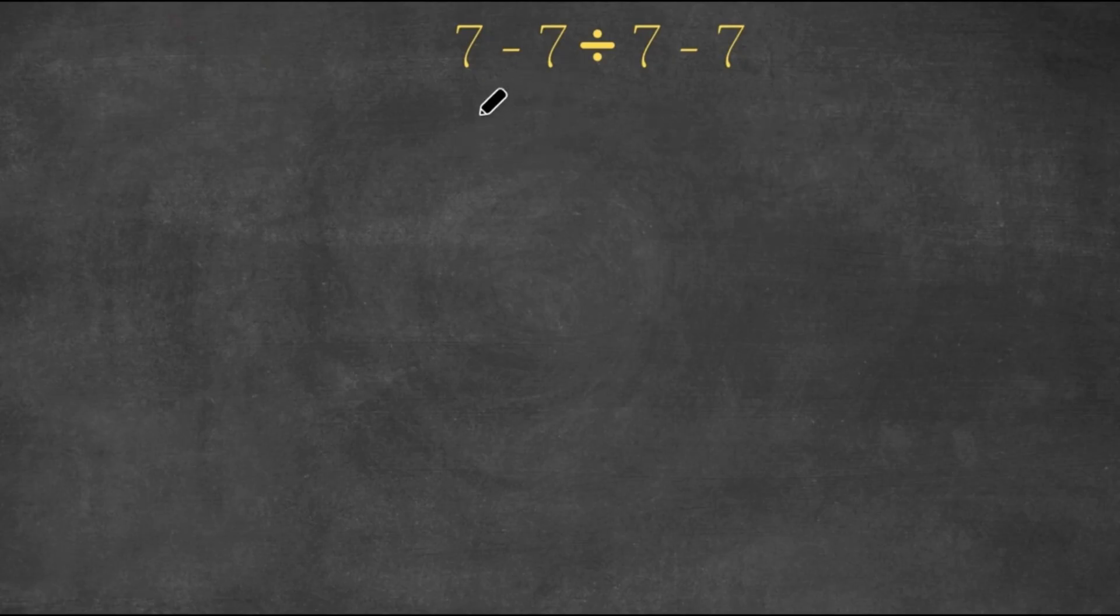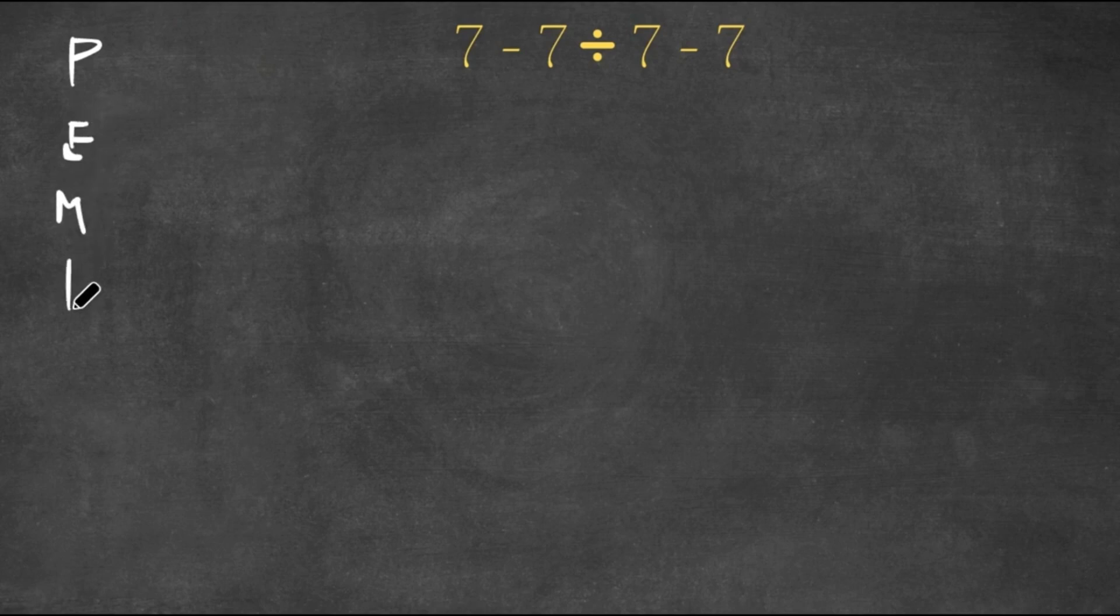So right here we have 7 minus 7 divided by 7 minus 7, and to solve this problem we need to use order of operations, also known as PEMDAS: P, E, M, D, A, S.